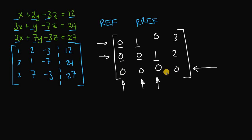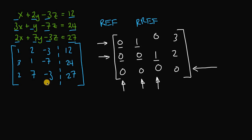Finally, every column that contains a leading 1 has zeros above and below it. In the second column we have a leading 1 with all elements below it being 0. In the third column we have a leading 1 with a 0 above and below it. We're really only concerned with values above the rows that are all zeros.